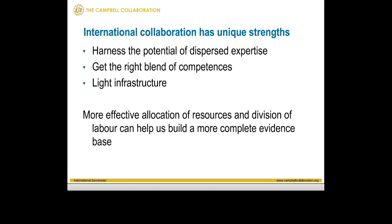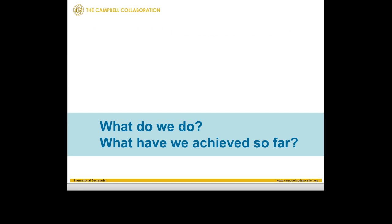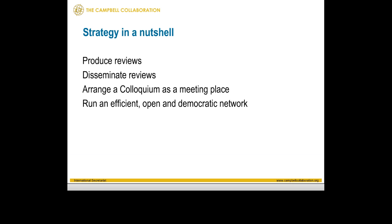Now I'll turn this to our CEO, Eamon Noonan. What do we do and what have we achieved so far? We start with great ideas and large ambitions of trying to improve the world and improve the lives of people, particularly the vulnerable or people at risk. We have adopted a strategy with four components: first, to produce systematic reviews, filling the knowledge gap found in many areas; second, to disseminate the reviews so that findings become available for decision making on policy and practice.